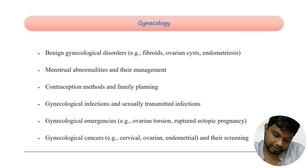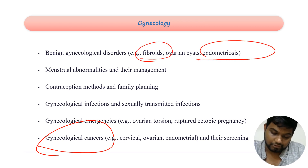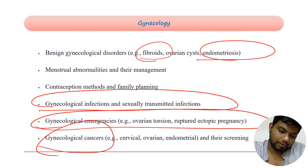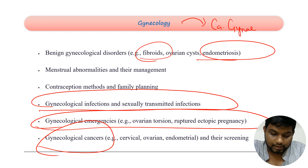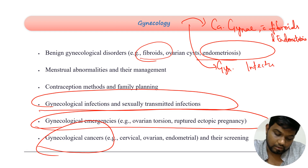Speaking about gynecology, the main high-yield area is gynecological cancer — cancer gynae. Also important are uterine fibroids and endometriosis, gynecological infections including STDs, and gynecological emergencies like ovarian torsion and ruptured ectopic pregnancy. The very important areas in gynecology from the FMGE point of view are CA gynae with uterine fibroids and endometriosis.